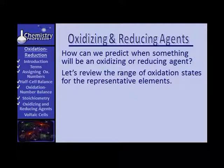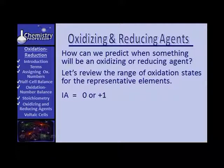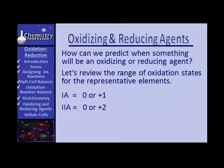Let's start out by reviewing the range of oxidation states for the representative elements. Get a periodic table and look at it. For the 1A elements, what are the common oxidation states? Zero or plus 1. Granted, hydrogen can be negative 1, but for the rest of the 1As it's 0 or plus 1. What about the 2As? They are generally 0 or plus 2.